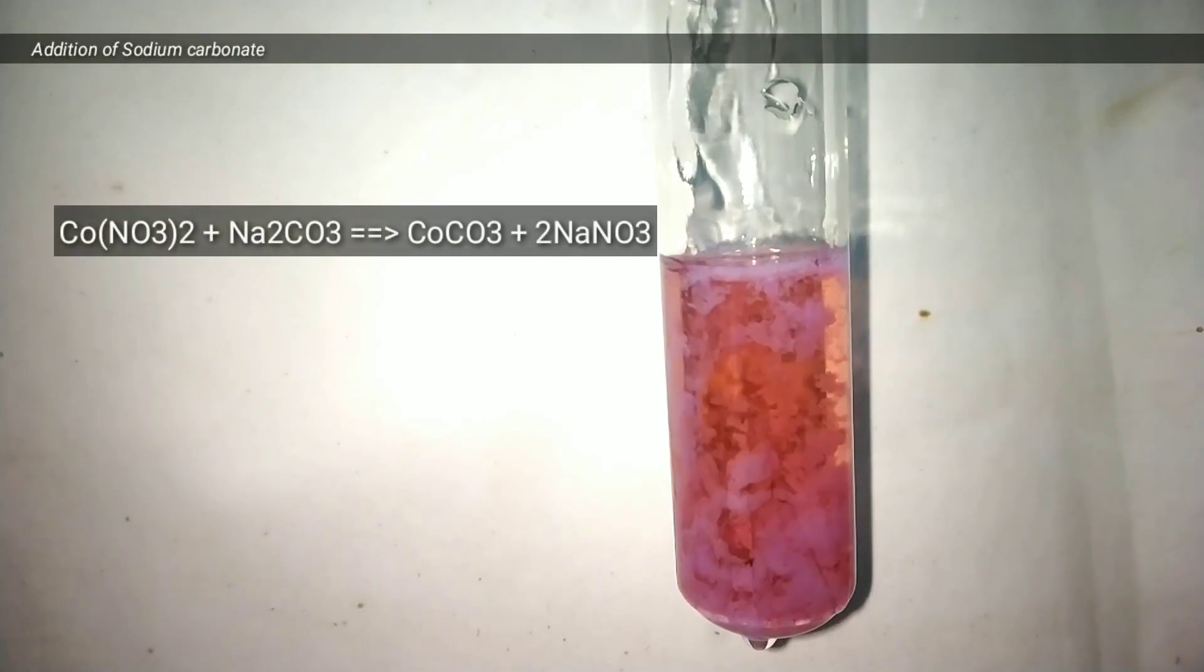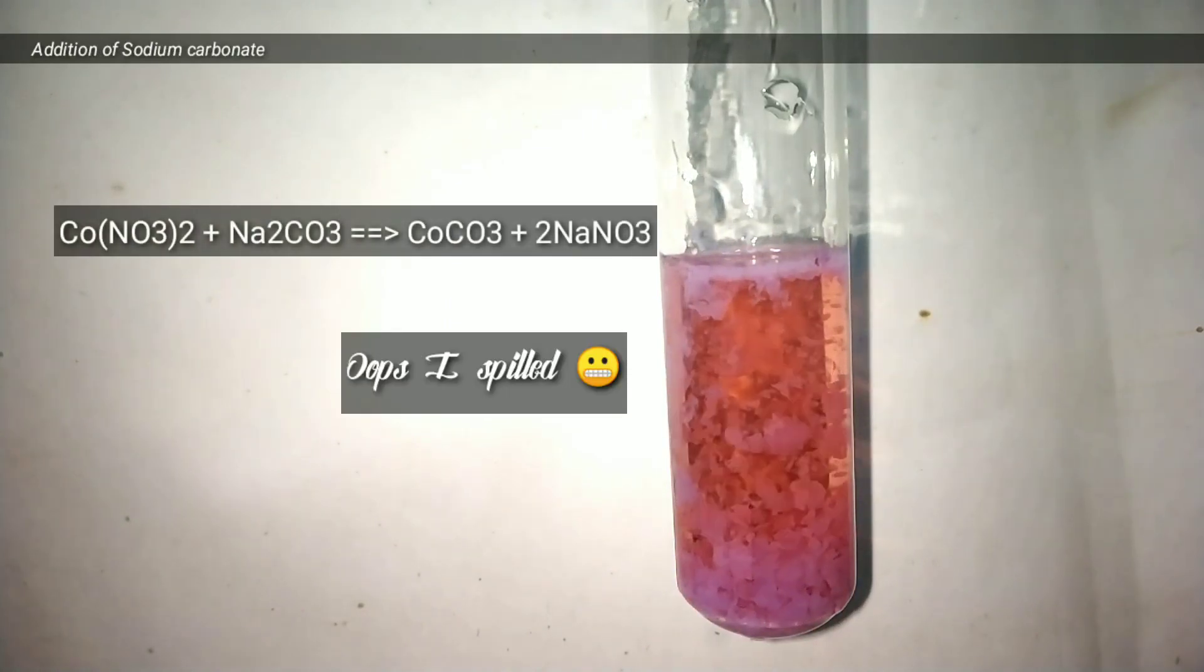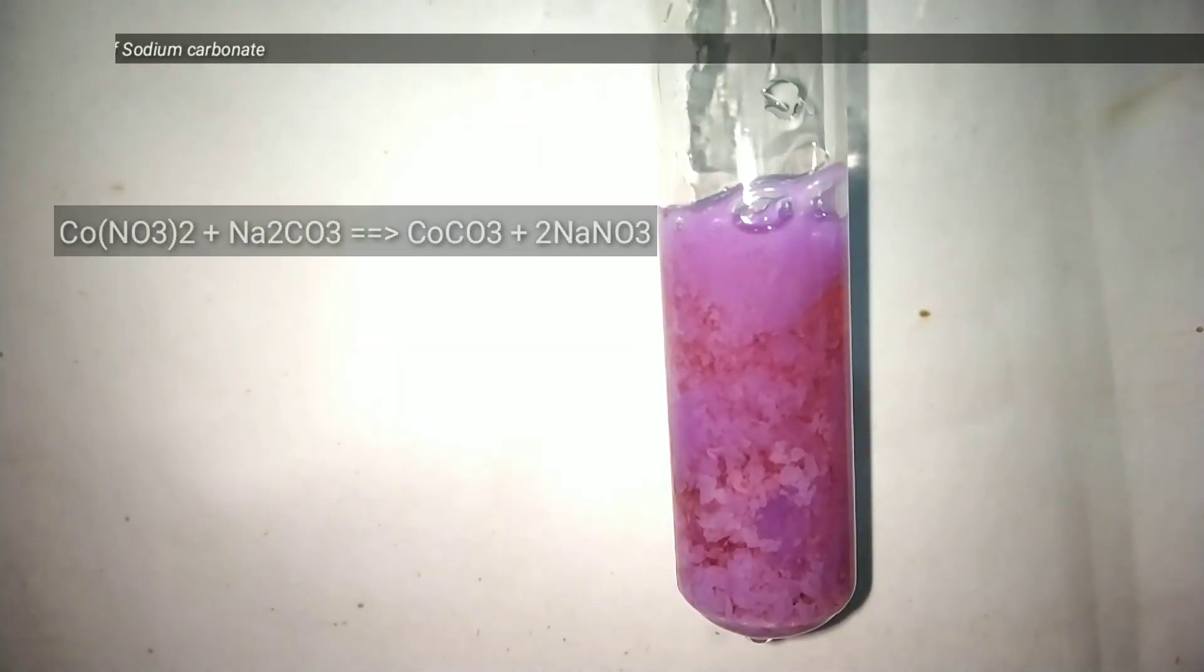Next we take some sodium carbonate solution and add it into cobalt 2 chloride. On adding we can see the pink precipitate of cobalt 2 carbonate.